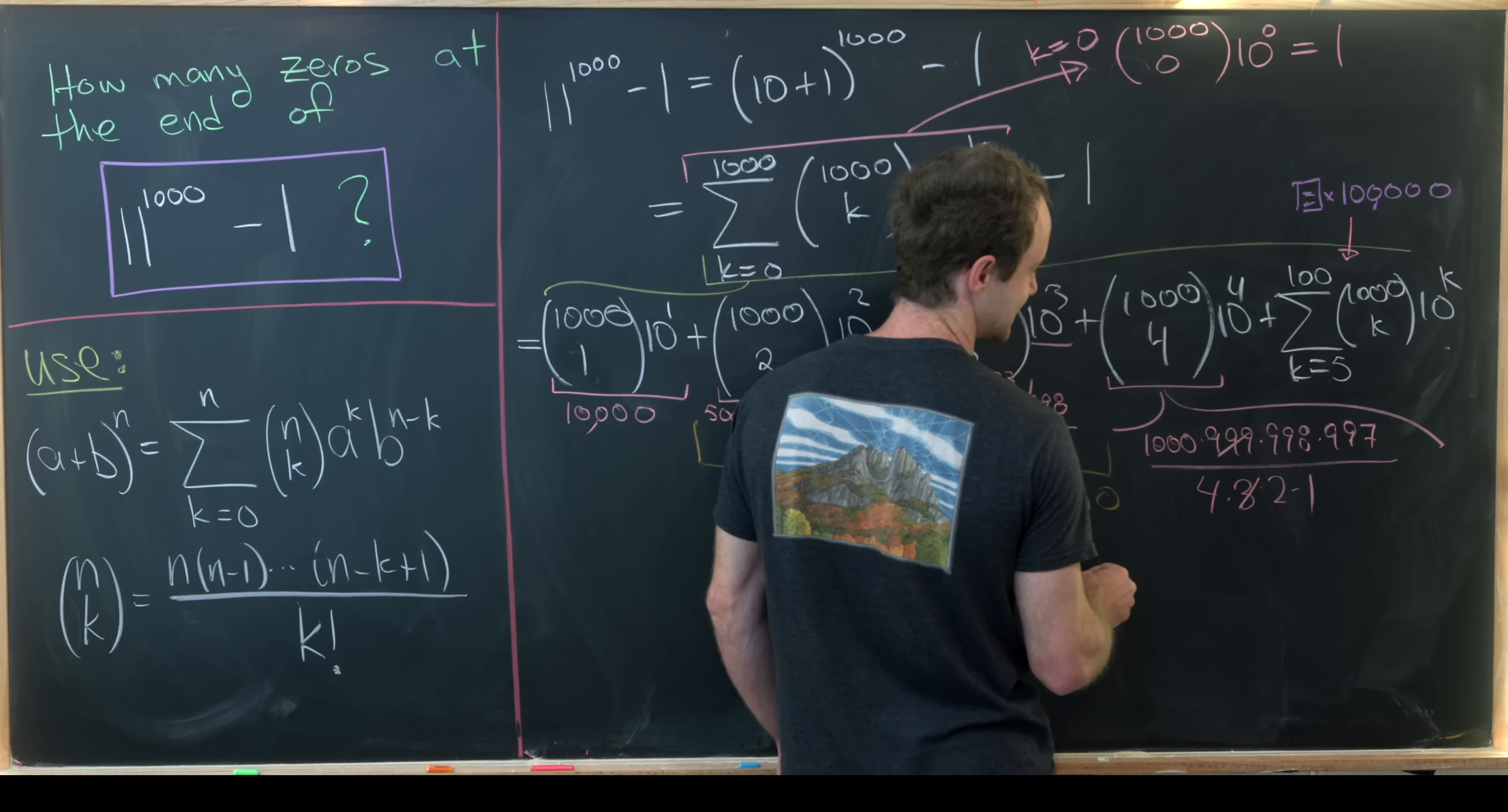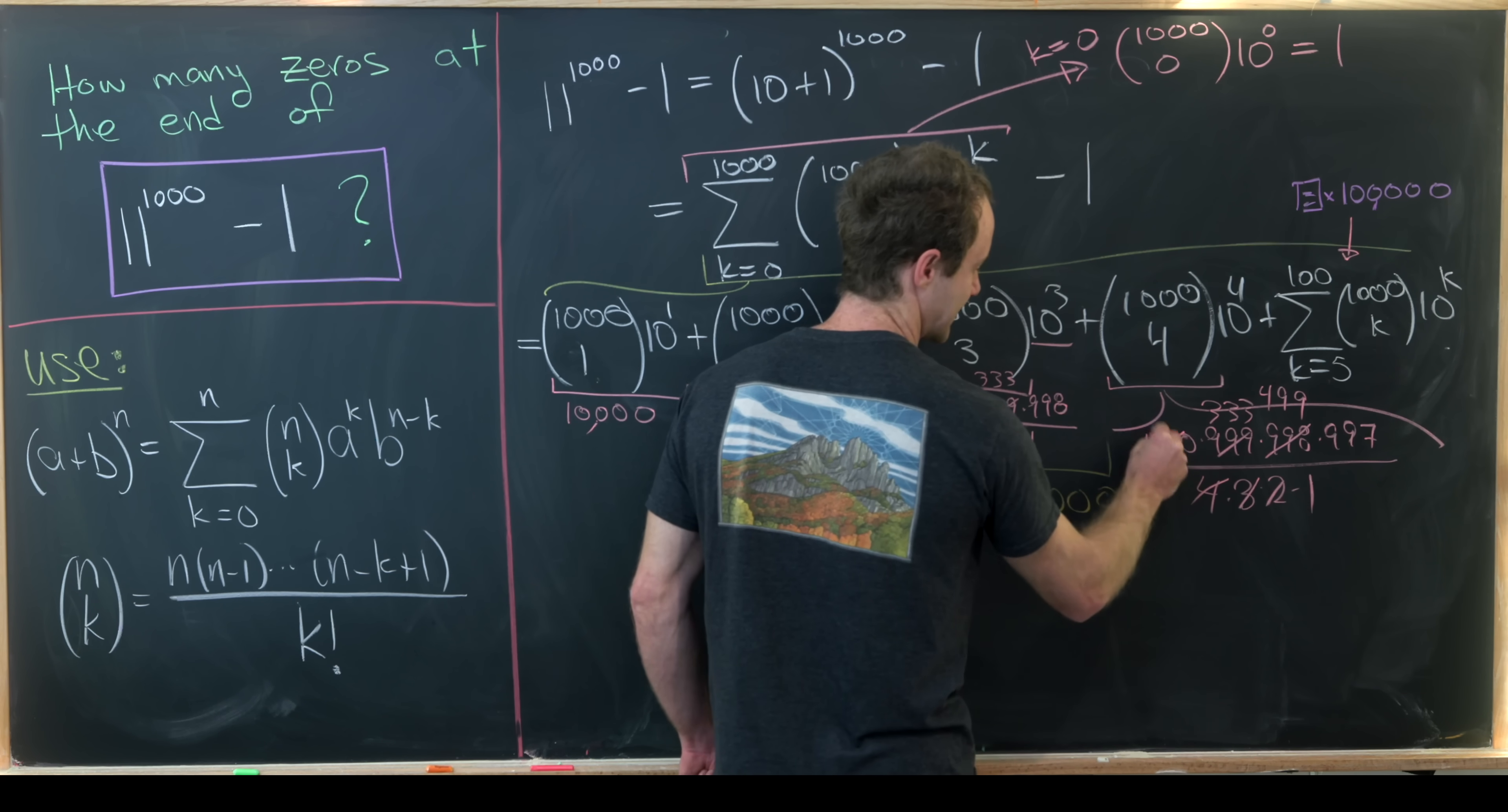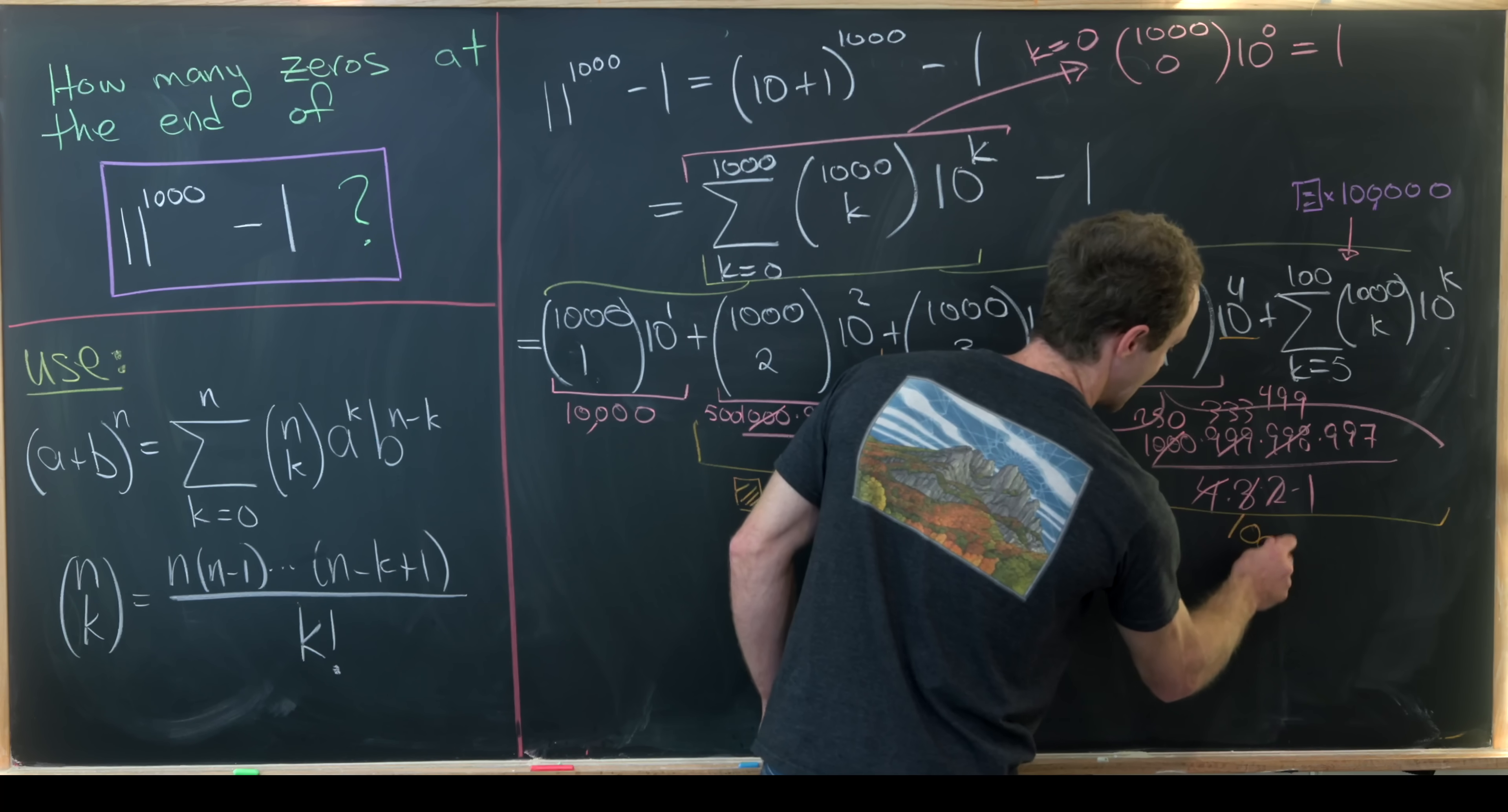So we can cancel. So this 3 is going to cancel this 999 down to 333. We can take this 2 and cancel this 998 down to something like 499, and then we can take this 4 and cancel this 1,000 down to 250. Now the important thing here is that what's left over ends in a single zero. But then when combined with this 10 to the 4 we'll see that what's left over ends in five zeros.